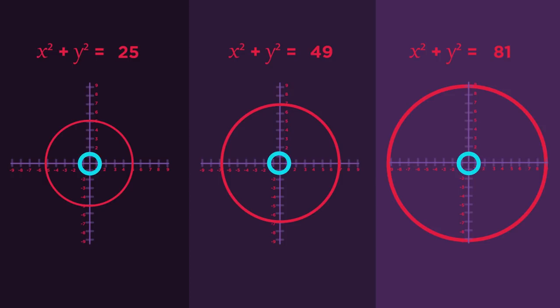Let's have a look at three different circles, all with their center at the origin. What do you notice about the equations and the radius of each circle? I'm sure you all spotted that the equals number is always the radius squared: 5 squared, 7 squared, and 9 squared.